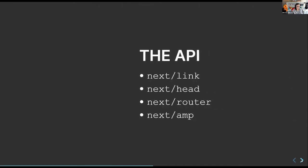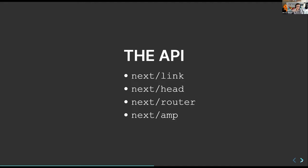The main Next.js APIs people use most are: Next.link — a glorified anchor tag that wraps links and does client-side transitions with preloading, making them super fast. Next.head — a React component for the HTML head, letting you programmatically change your title or meta tags. Next.router — a React hook to get query parameters, the current path, and do redirects. Next.amp — allows you to generate Google AMP pages, built into the Next.js API with help from the Google team.